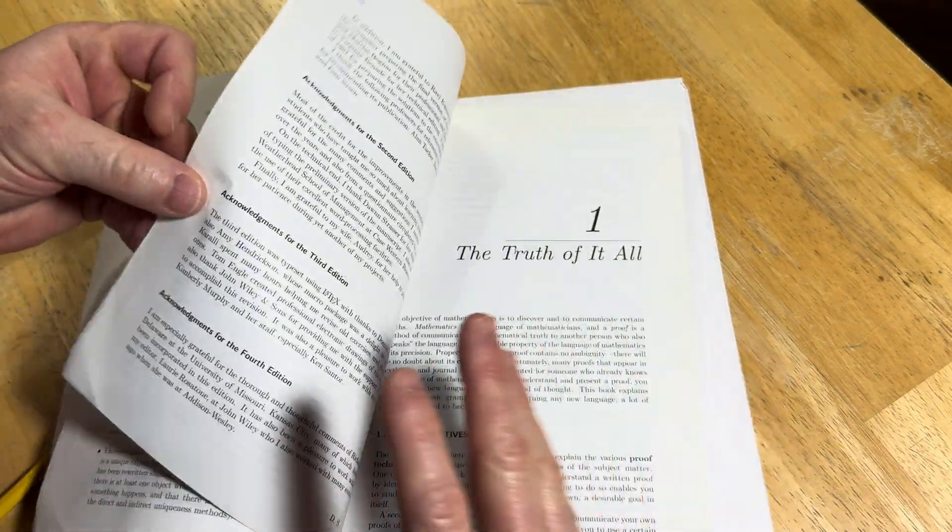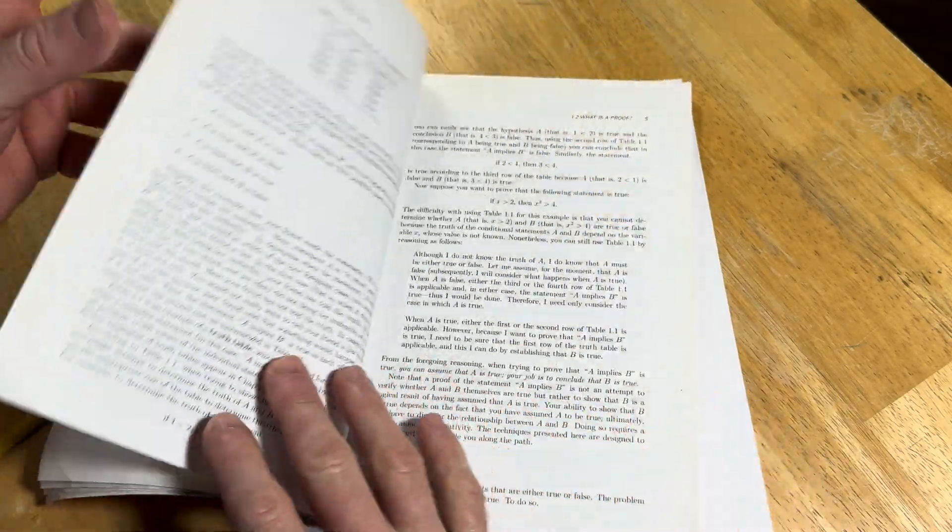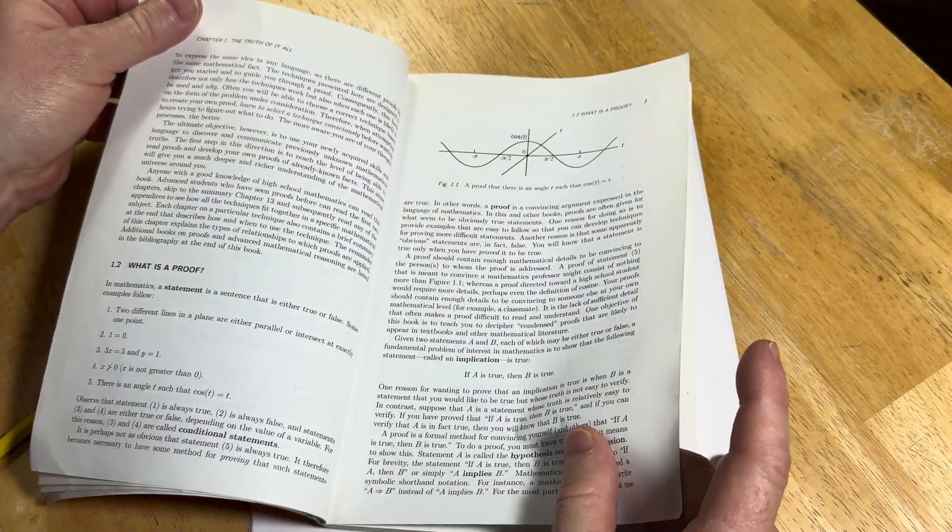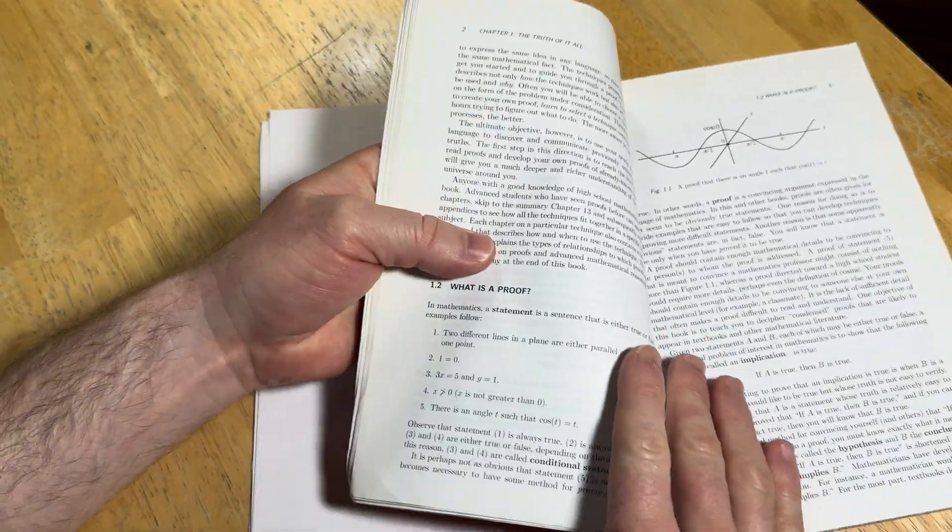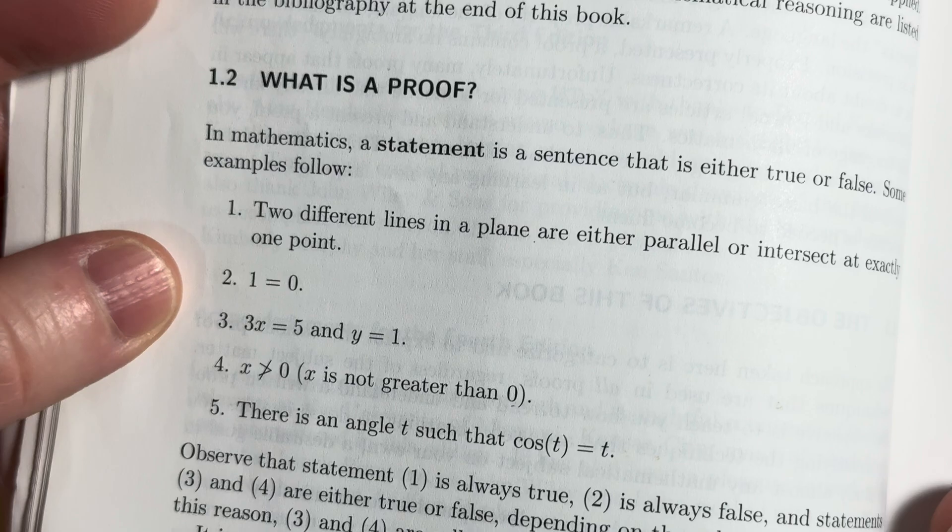So there's an introduction here talks about the objectives of the book. And let's go here to what is proof. Let's take a look at what Daniel has to say about what is a proof. This is really interesting.